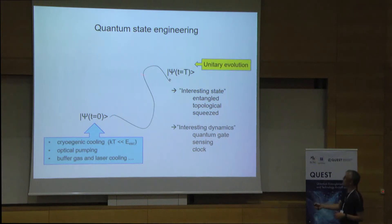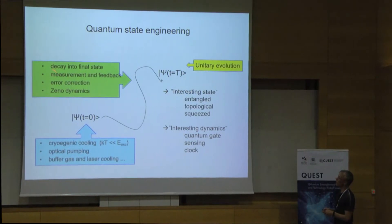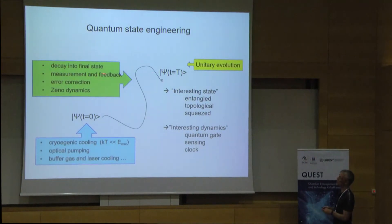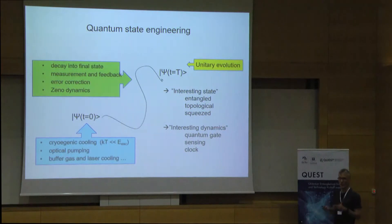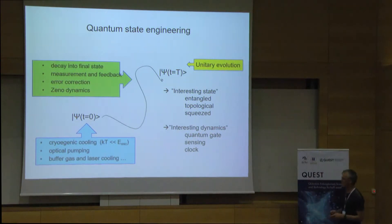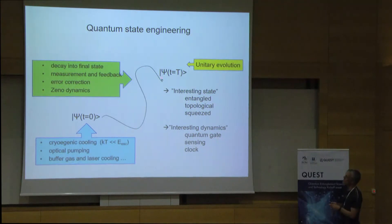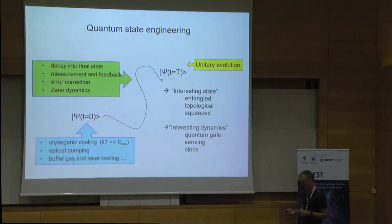But that something that happens here does not even have to be unitary to achieve these goals. My presentation will be about decaying into that final state, or using measurements and feedback — which is also engaging dissipation — to go from initial to final state. Error correction mechanisms in quantum computing is also about having dissipation, doing measurements on your system, correcting those errors, and then getting into the state you want. And finally, I'll also talk about Zeno dynamics, which is a mechanism that affects the evolution of a system, takes you towards interesting states, benefiting from the effects of dissipation.